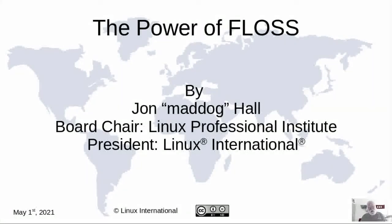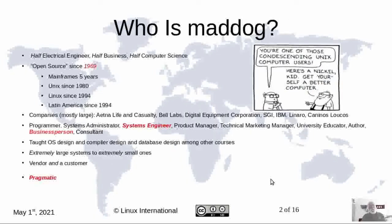Hello, my name is John Mad Dog Hall, and I'm the board chair of the Linux Professional Institute and the president of Linux International. Our talk today is called The Power of FLOSS, or Free and Libre Open Source Software. I've been in the computer industry for over 50 years, with a wide variety of different jobs, from programmer to systems administrator, product manager, and all sorts of other things. I want you to know that I've been around a while and I happen to know a few things about free software and computers.